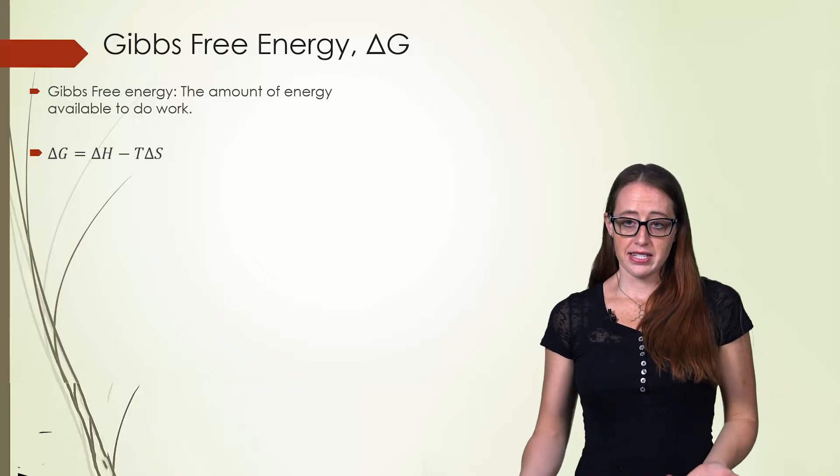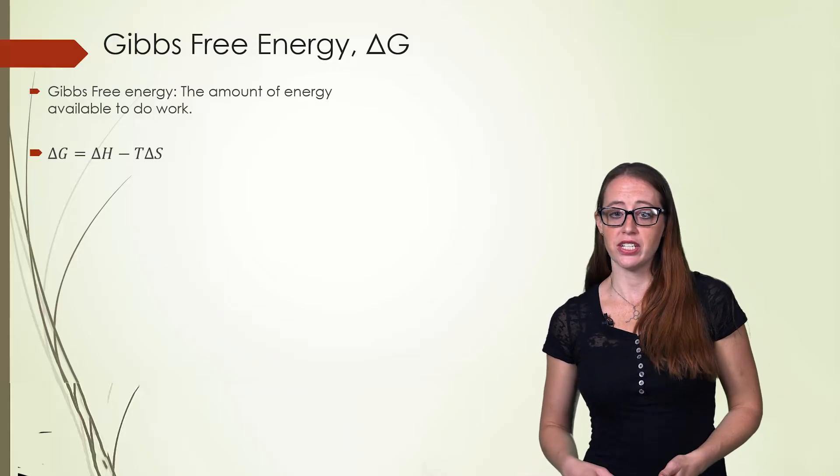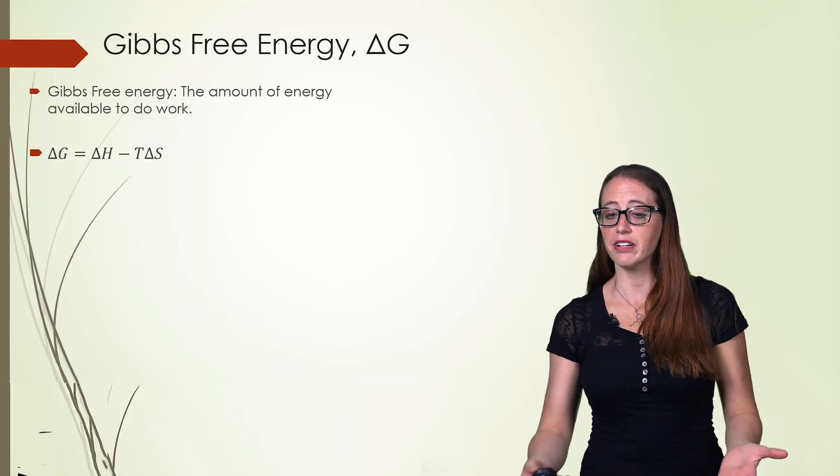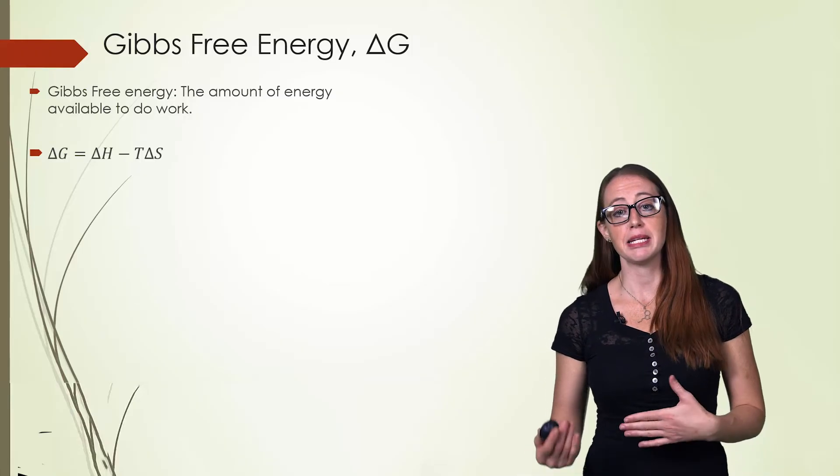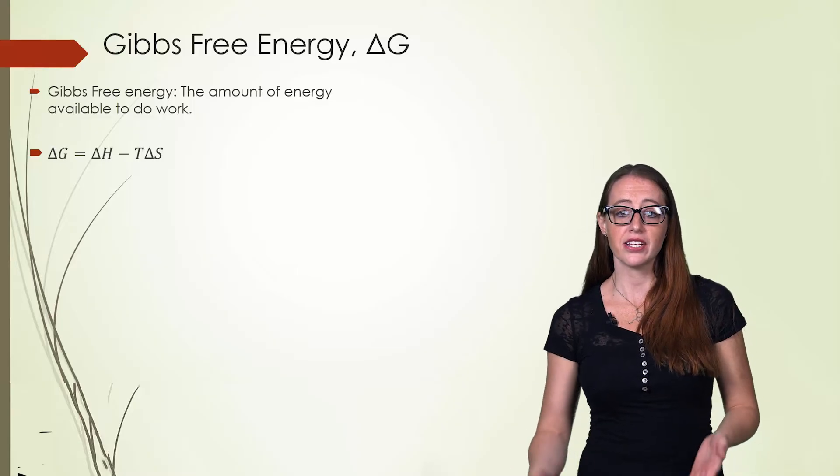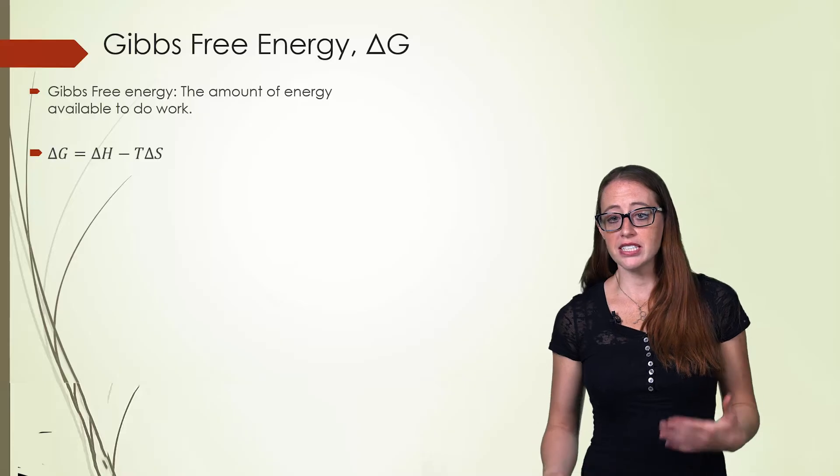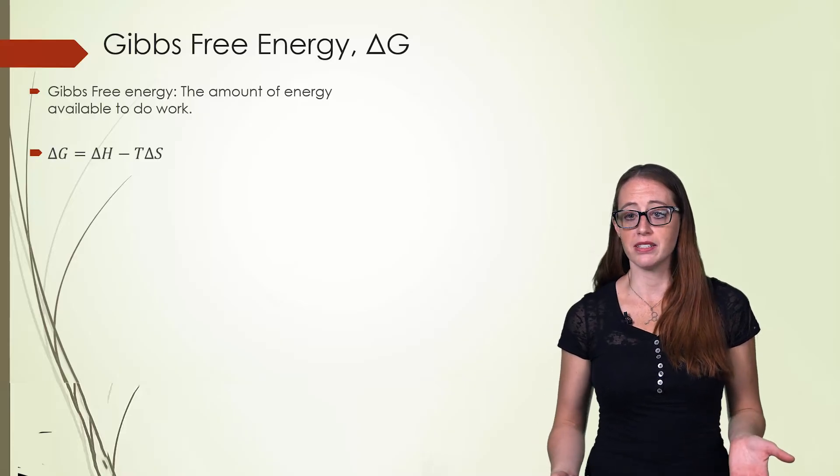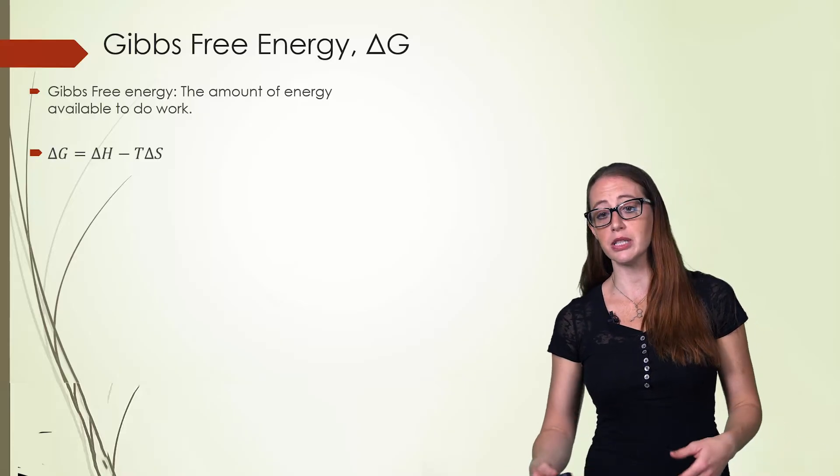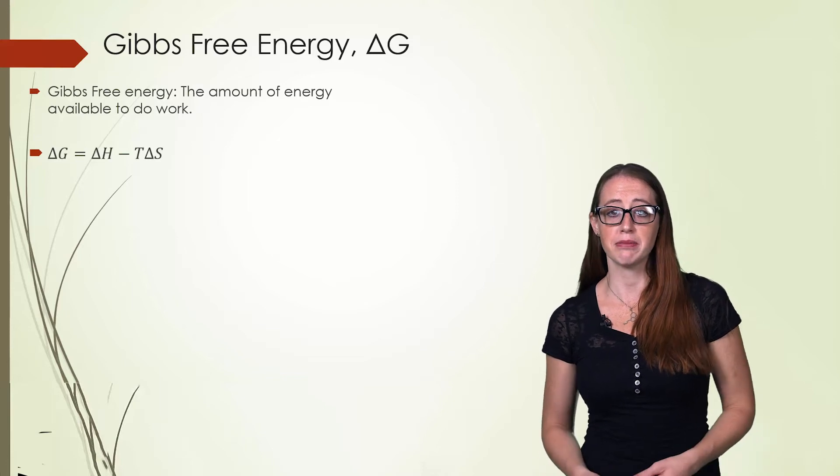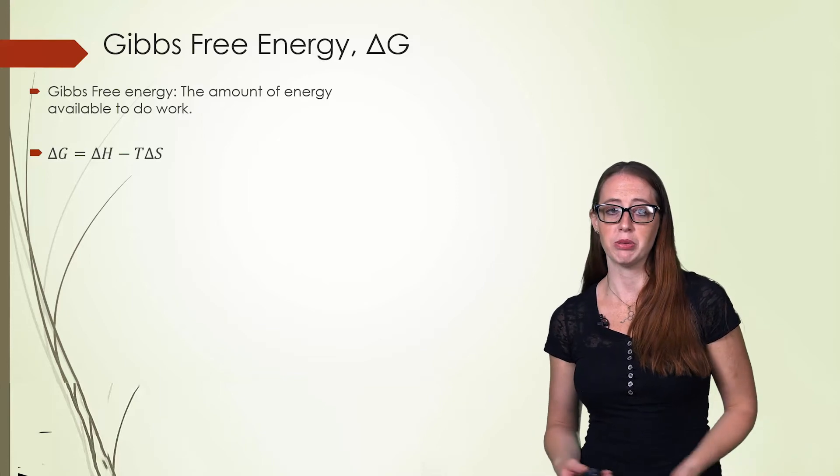To keep with the convention on signs, a negative ΔG or negative delta G is a release of energy and therefore is spontaneous. And a positive delta G takes energy in and is non-spontaneous. There are times that the Gibbs free energy could be zero. This is a special case called equilibrium, and you'll discuss that a lot more in a later class.